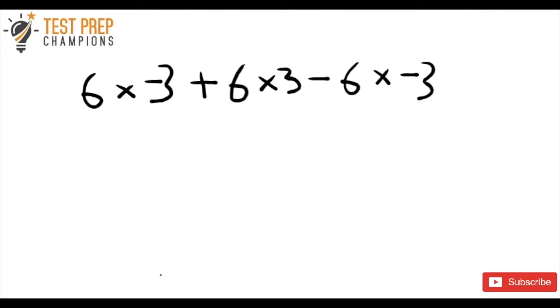The problem here, let me read it out so you can understand my handwriting, and then I'll let you pause the video and try it on your own first. So we're doing 6 times -3 plus 6 times 3 minus 6 times -3. I wanted to read this out so you don't get confused. These are not x's, these are multiplication signs. So again, that's 6 times -3 plus 6 times 3 minus 6 times -3. Go ahead, pause the video, and try this out on your own.